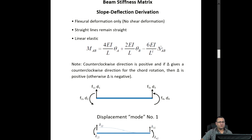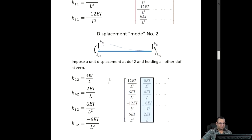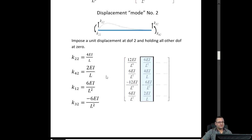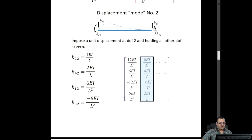Applying the slope deflection equation again with theta A equal to 0, theta B equal to 1 (the imposed unit rotation at the far end), and delta AB equal to 0, we get MAB, which is K42, equals 2EI over L. Using equilibrium by summing moments about the far end, K12 equals 6EI over L squared. From summation of y equals 0, K32 is the opposite sign of K12, therefore K32 equals minus 6EI over L squared.